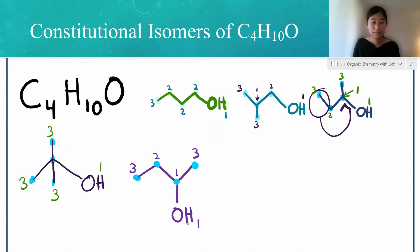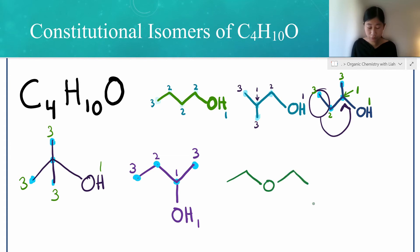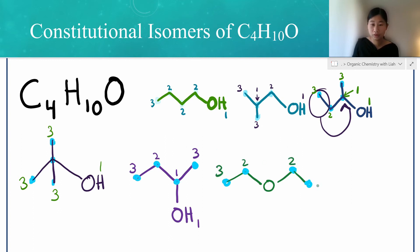Now what if we move this oxygen and put it somewhere in the middle of the chain instead of on the end, as we have been doing? We will draw this chain and put the oxygen somewhere in the middle, making sure we still have four carbons. For our hydrogens, we have three, two, two, and three — five plus five — that is ten. So this would be another constitutional isomer for this molecule.